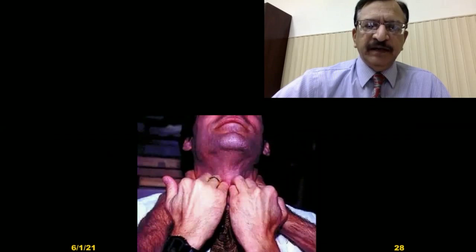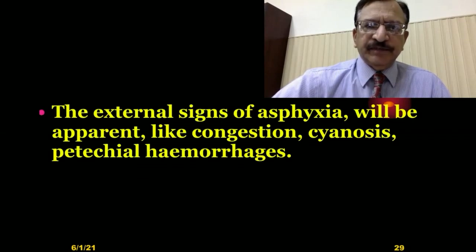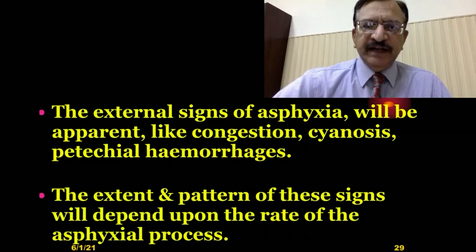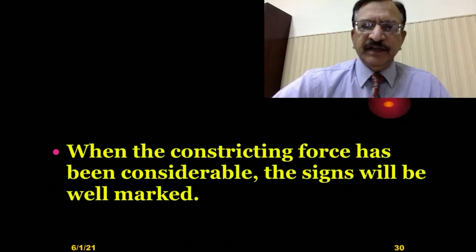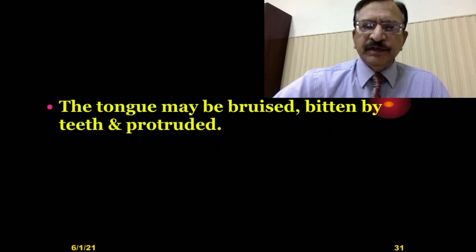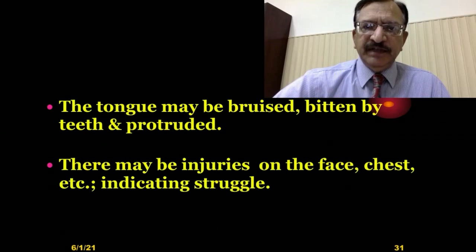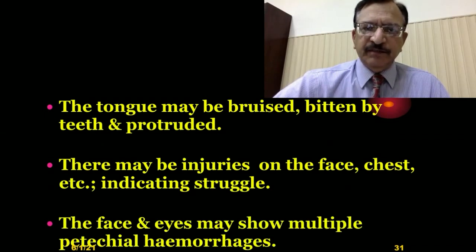When two hands are applied and the victim is trying to get free, external signs include congestion, cyanosis, and petechial hemorrhages — these are non-specific signs of asphyxia. Their extent and pattern depend upon the rate of the asphyxial process. When the constricting force is considerable, the signs will be well marked. The tongue may be bruised or protruded. There may be injuries on the face and chest indicating struggle by the victim. The face and eyes may show multiple petechial hemorrhages.